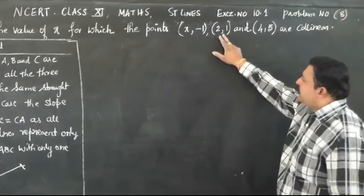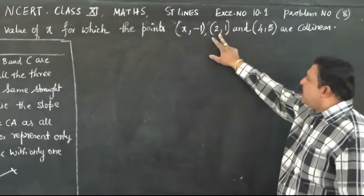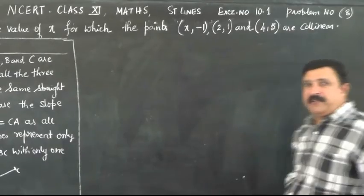There are 3 points. We can take (x, -1) as point A, (2, 1) as B, and (4, 5) as point C.